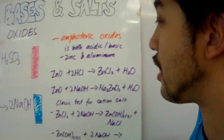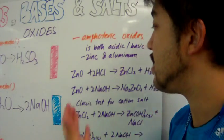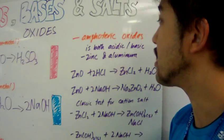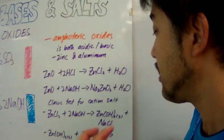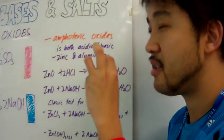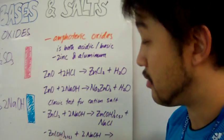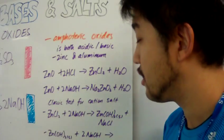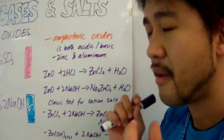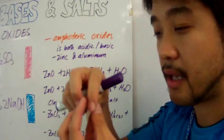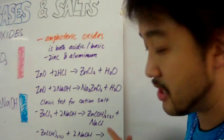When we do identification of unknown salts, and if it's a salt that is made of zinc and aluminum, you can do this test because of the amphoteric nature of zinc and aluminum. You can do a classic test to identify whether the cation in the unknown salt is zinc or aluminum. I'm going to use zinc as an example. We have zinc chloride - that's a salt. You put a little bit of sodium hydroxide, and what you will see is the precipitation that's coming out in the test tube. That precipitation is actually zinc hydroxide, and that's a solid.